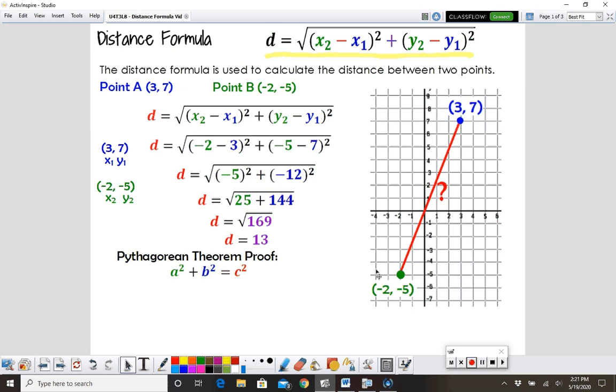Now, if you're given a coordinate graph, you could also use your Pythagorean theorem here. What you would do is draw these lines from these points to create a right triangle.